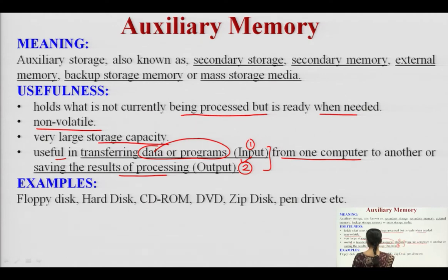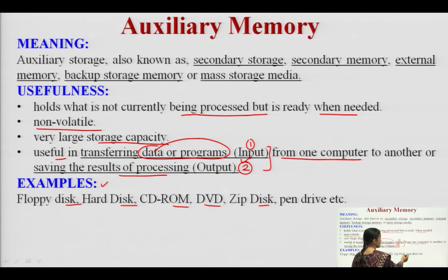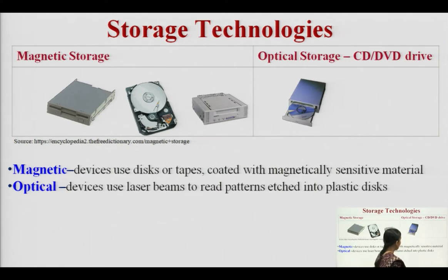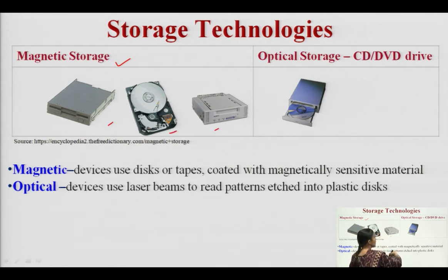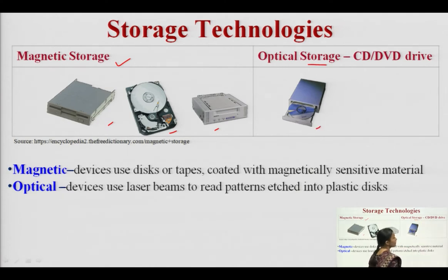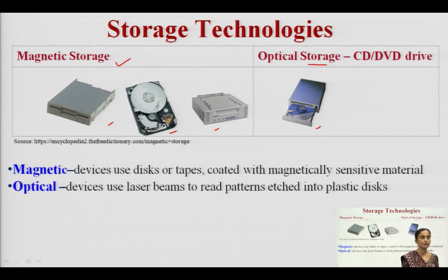Examples of auxiliary memory include floppy disk, hard disk, CD-ROM, DVD, zip disk, pen drive, etc. Based on their types, we can divide all auxiliary memories into two categories: magnetic storage and optical storage. Examples of optical storage are CD or DVD drives. So if we categorize them, one is magnetic and the other is optical.